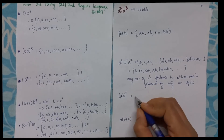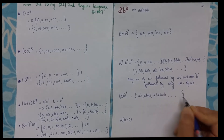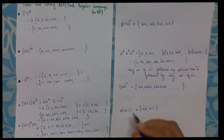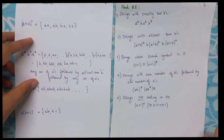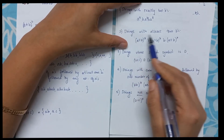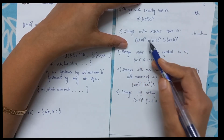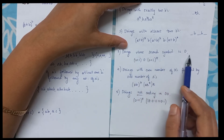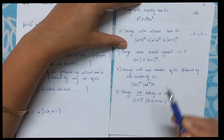Now (ab)* indicates ab, abab, ababab, and so on. In case we need to write a regular expression for strings with exactly two b's, with a's around, it would be a*ba*ba*. For strings where the second symbol is zero, the first can be anything, the second has to be zero, followed by any number of zeros and ones: (0+1)·0·(0+1)*.